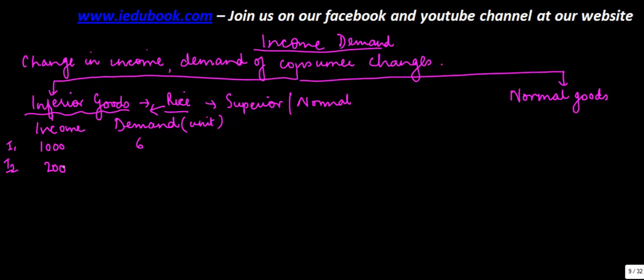When my income increases from 1000 to 2000, obviously I am going to demand a lower quantity of this good, so I will buy maybe three, two, or maybe even zero.